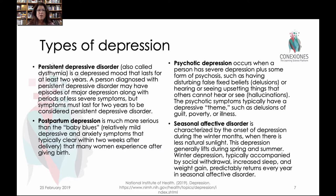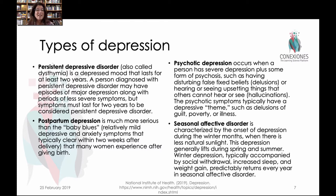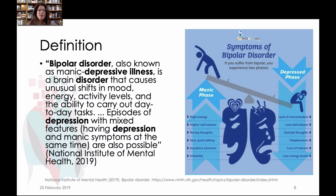We have persistent depressive disorder, also known as dysthymia — a depressive mood that lasts for years. Other types include postpartum depression, which is very serious, caused by hormonal changes and typically presenting about two weeks after delivery. Psychotic depression is a form of severe depression that also includes psychosis, such as delusions or hallucinations. Seasonal affective disorder is related to the changing of the seasons and lack of sunlight. There's also bipolar disorder, a manic depressive illness with both phases of depression and hyper or positive manic behavior.